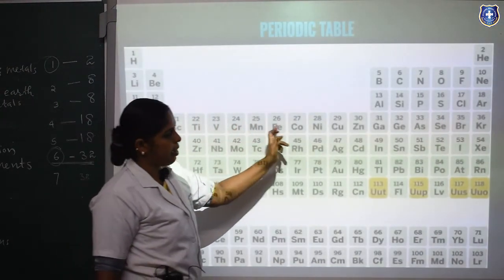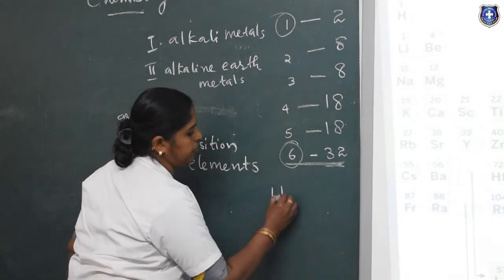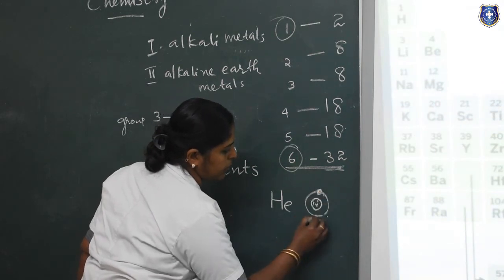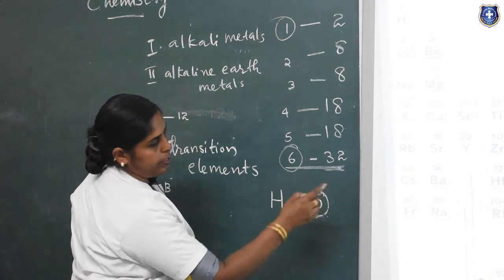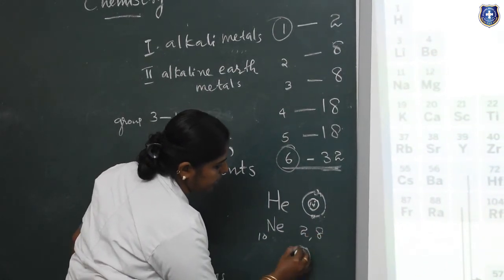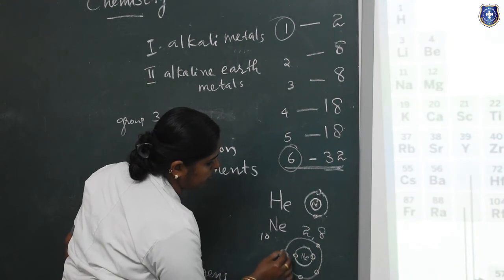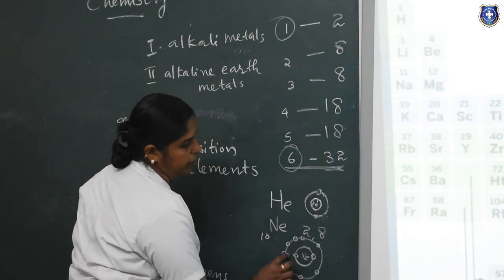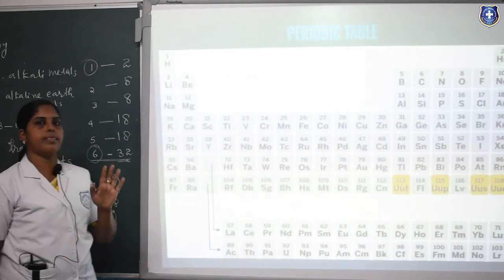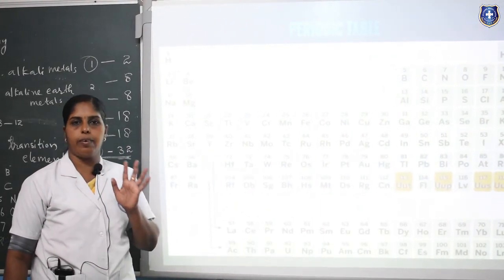As atomic number increases from left to right, the last shell becomes completely filled. For example, helium has two electrons — completely filled. Neon has atomic number 10, with two electrons in the first shell and eight in the next — completely filled. Similarly, argon, krypton, xenon, and radon all have completely filled orbits. So they are known as inert gases or noble gases — elements whose outer shell orbit is completely filled. The inert gases are helium, neon, argon, krypton, xenon, and radon.